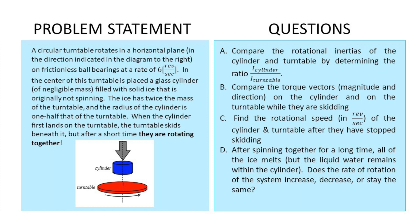When the cylinder first lands on the turntable, the turntable skids a little beneath it, but after a short time they are rotating together. Part A says: compare the rotational inertia of the cylinder and the turntable by finding the ratio I_cylinder over I_turntable. Explain or show your work.